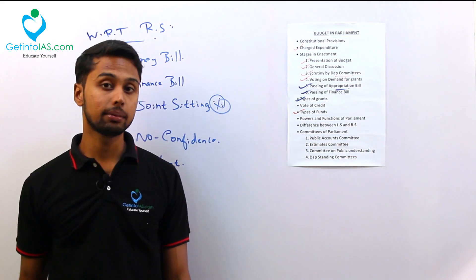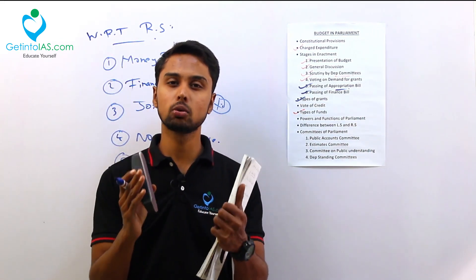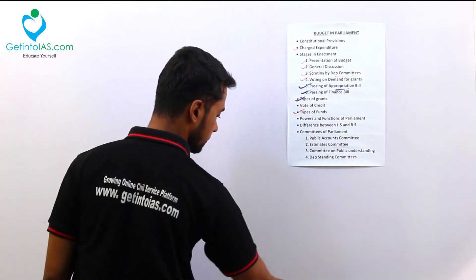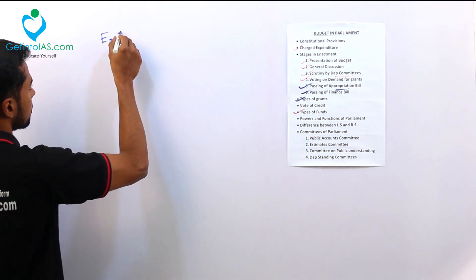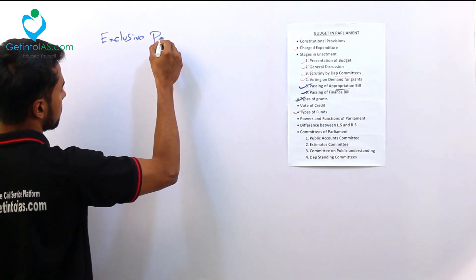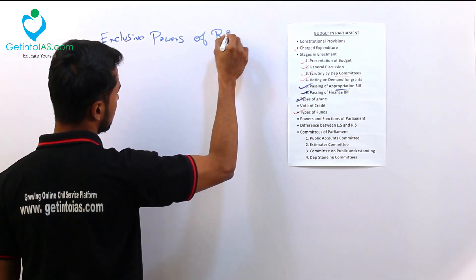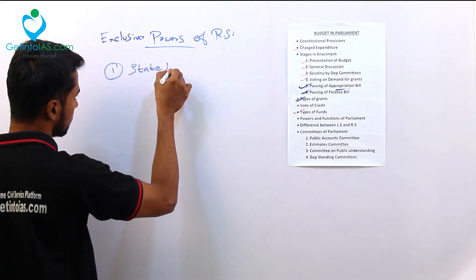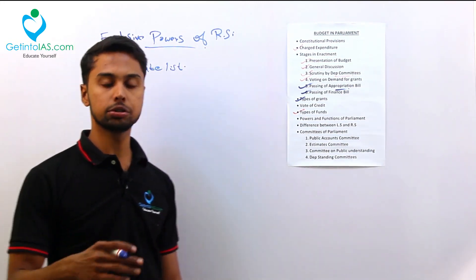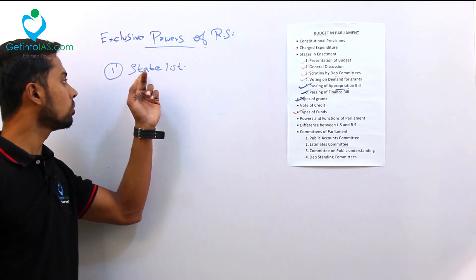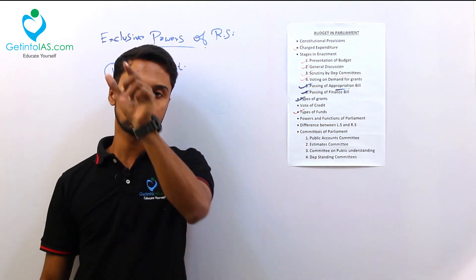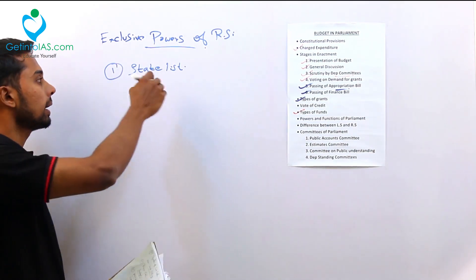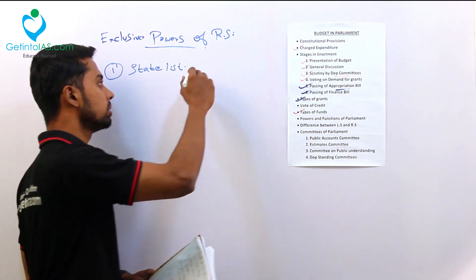However, Rajya Sabha also has some exclusive powers that only it can exercise. First is the State List. When Rajya Sabha passes a resolution that it wants to make laws in the State List, that can be done. This is an exclusive power of Rajya Sabha.